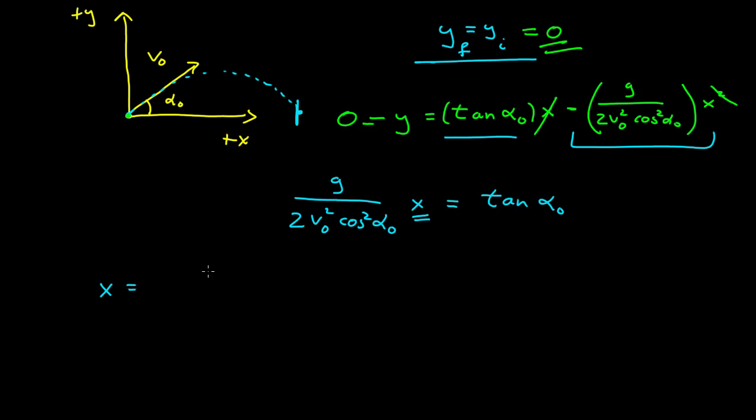So then x is equal to 2 initial speed squared, cosine squared of the launch angle over g times tangent of alpha. If I separate that out, that's sine of alpha naught over cosine alpha naught. We get one of our terms of cosine alpha naught to cancel.